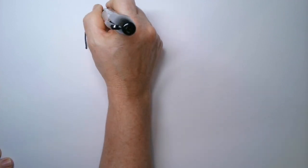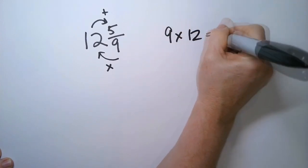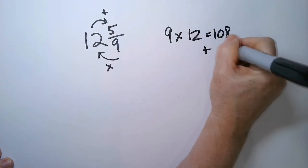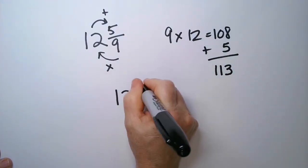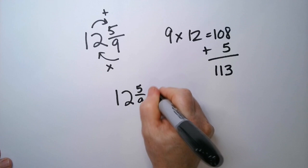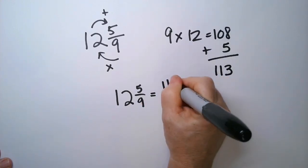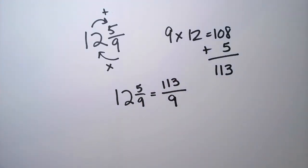And then we're going to add this. 9 times 12 is 108. And then we're going to add 5. So, it's 113. So, 12 and 5 ninths is the same as saying 113 ninths.